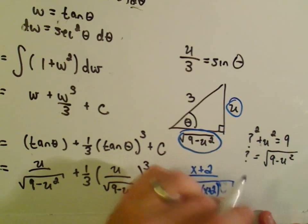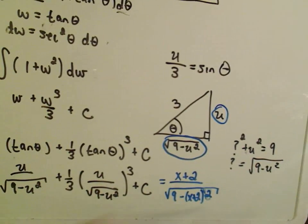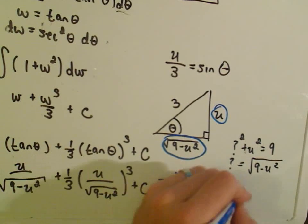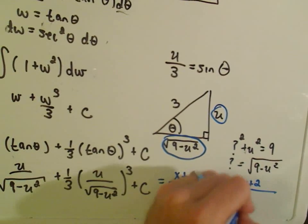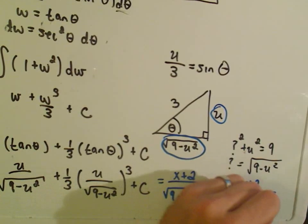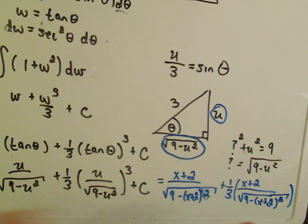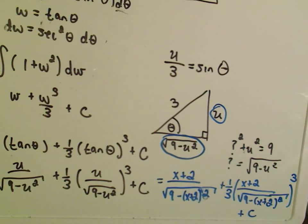So on top we'll get x plus 2 divided by the square root of 9 minus the quantity x plus 2 squared, plus 1 third times x plus 2 all over the square root of 9 minus x plus 2 squared, all raised to the third power. And don't forget your plus c. You could even multiply out the denominator and you would get that original quadratic that we dealt with at the beginning.